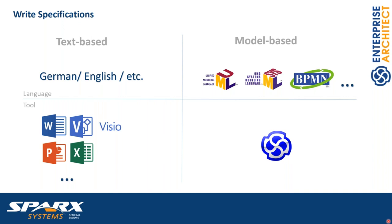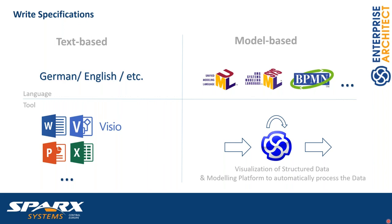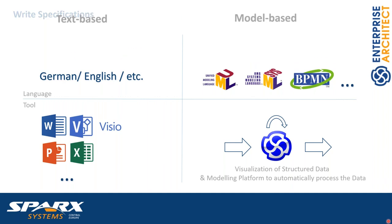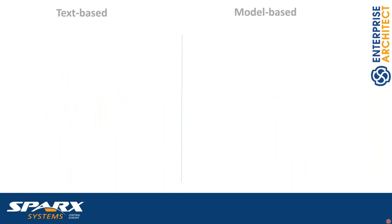What we're comparing now is a text-based specification approach to a model-based specification approach. What does a model-based approach provide that a text-based approach does not? The modeling platform Enterprise Architect provides a lot of automations. The graphical modeling language itself is actually a visualization of structured data, and EA provides many automations to process that data — this is already a benefit of going with a model-based approach.